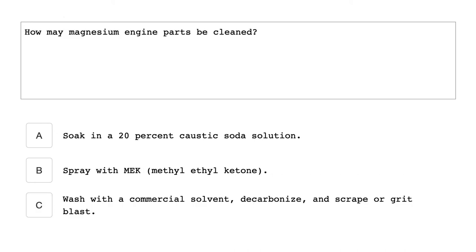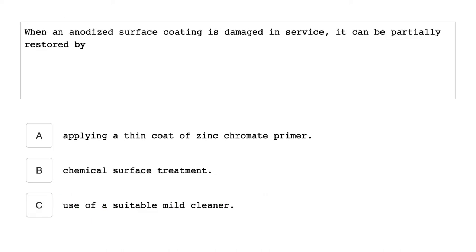How may a magnesium engine part be cleaned? Washed with a commercial solvent, decarbonized, and scraped or grit blasted. It can also be treated by chemical surface treatment.